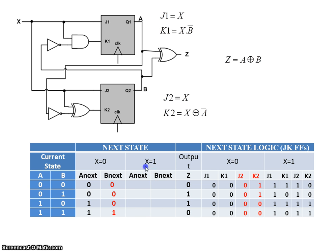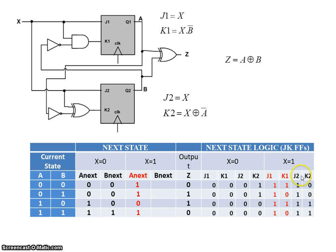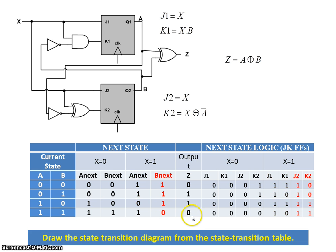Now we fill out A_next and B_next for X equals 1. For A_next, J1=1 and K1 varies. When J=1 and K=1, A_next is the opposite of A, giving 1, 1, 0, 1. For B_next using J2 and K2: J2=1, K2=0 sets B to 1; J2=1, K2=0 sets B to 1; J2=1, K2=1 toggles B from 0 to 1; J2=1, K2=1 toggles B from 1 to 0. So B_next is 1, 1, 1, 0.